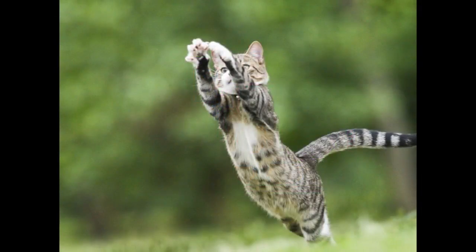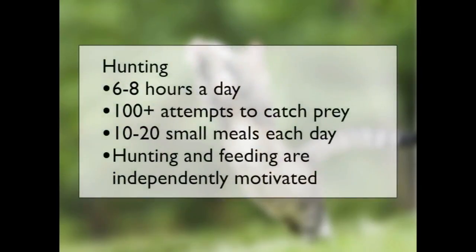Considering the hunting and feeding behaviour of cats: typically cats spend around six to eight hours a day hunting, making around 100 or more attempts to catch prey, of which only around 10 to 20 are successful, each resulting in a small meal. The cat may eat part of the prey and bury the remainder in loose sandy soil to desiccate, to eat later — though cats generally prefer live, fresh prey. Importantly, hunting and feeding behaviour are independently motivated. Cats will hunt, catch prey, consume it, and return to hunting immediately, even if relatively satiated. Their normal activity is to eat very small amounts, snacking on the go and returning to activity again.